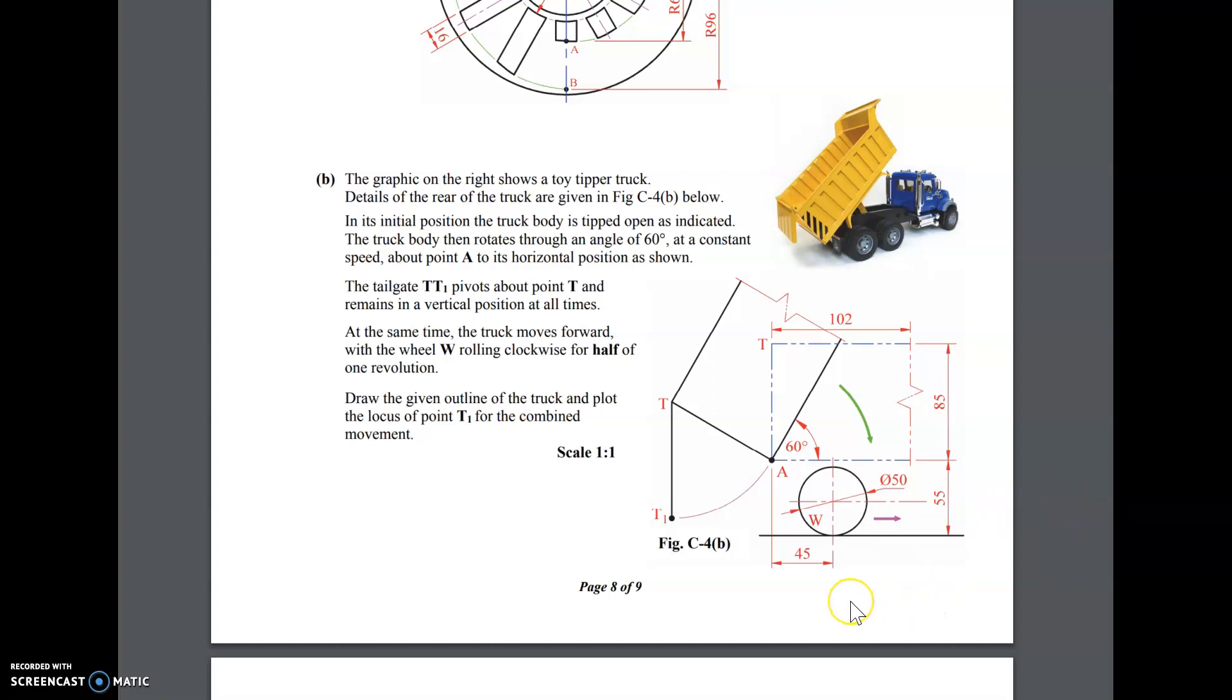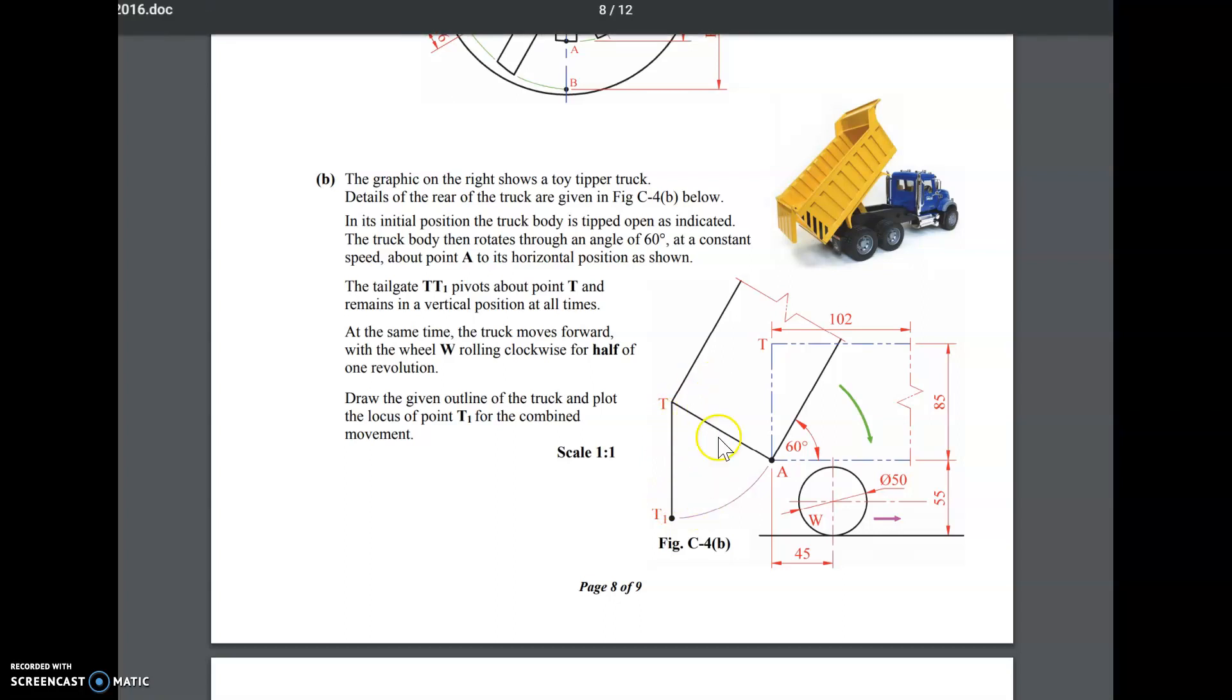Okay so there's a bit of thinking behind this question we need to visualize where it's moving. Right so T, T1 is here that's the back the tailgate that stays vertical the whole time. Okay so it's always going to be a straight line 90 degrees to our xy line here down here. Our wheel is going to rotate for half revolution, rolling clockwise for half one revolution, so half the circle so we only need to use half of one side.